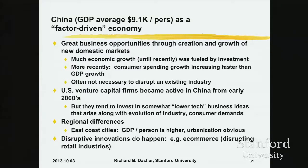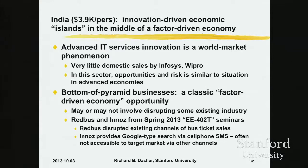China has regional differences that really track the US better than just about any other country in Asia. What is happening now is that a lot of the advanced East Coast cities are starting to compete against Tier 2 cities in the inland because labor and land are a lot cheaper there. But you do see disruptive innovations — e-commerce is really changing the way that retailing is done in China, and we have a presentation on that later in the series.